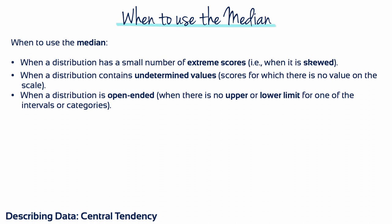The median serves as a better alternative to the mean when a distribution has a small number of extreme scores, or contains undetermined values, or is open-ended.